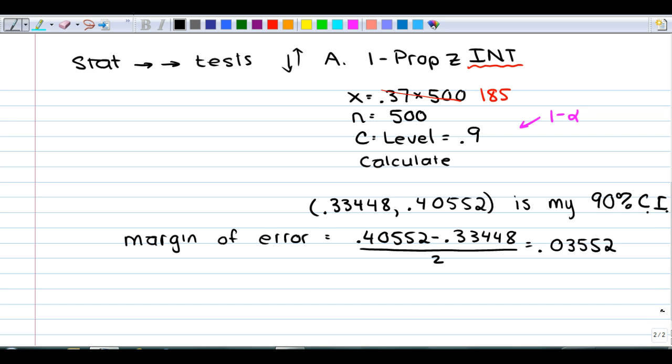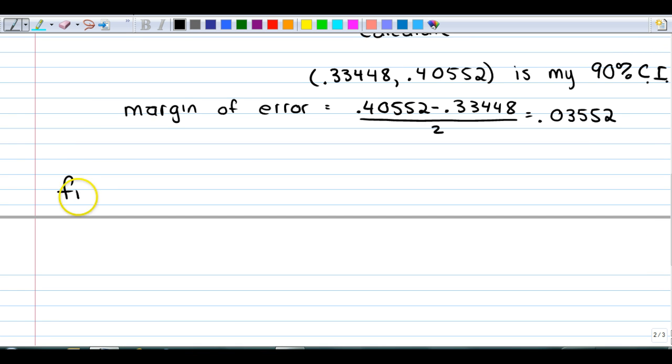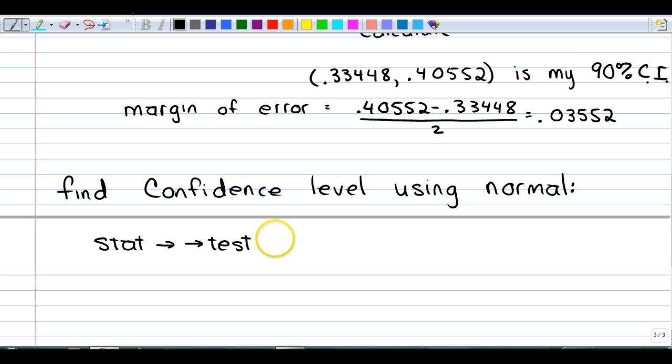If they gave me an x value and I wanted to find a confidence level using z, which is very unusual, then we would go to stat, arrow over to tests, this time we want choice 7, the z-interval.